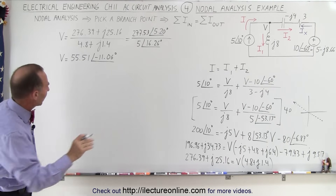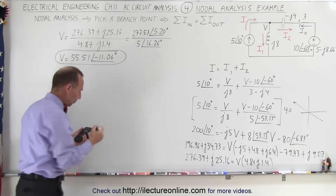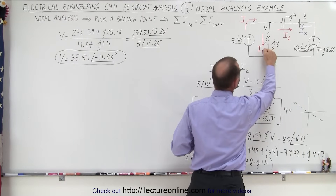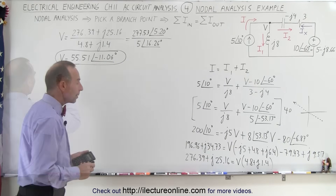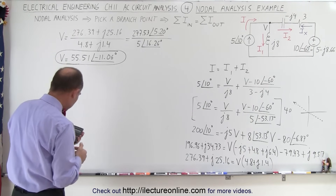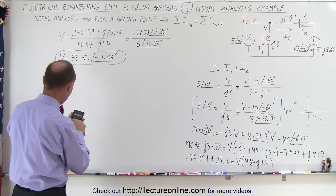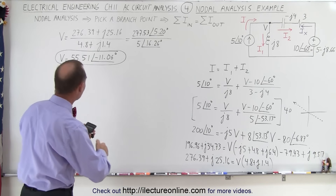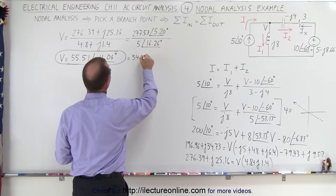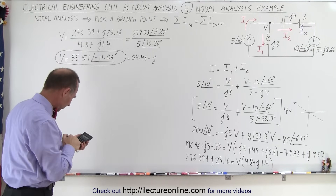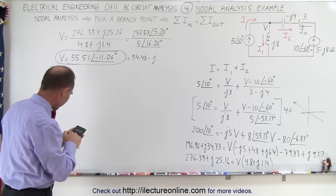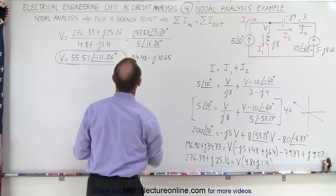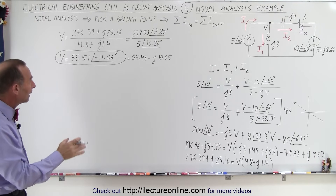We've found the voltage at the node — that's the result of nodal analysis. Now we can calculate i1 and i2. Converting v to rectangular form: 55.51 at minus 11.06 degrees gives 54.48 minus j10.65. We'll use this form to compute both currents.